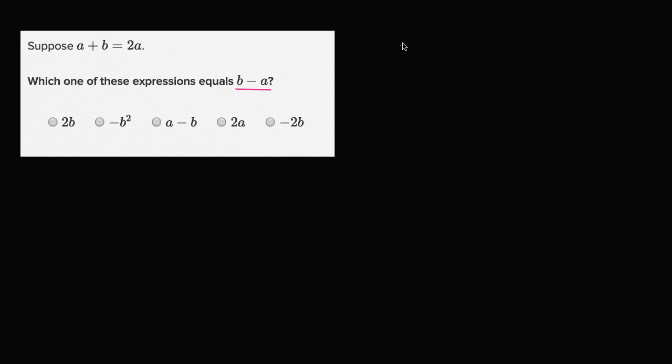So we are told that a plus b is equal to two a. The first thing I would want to do is get all my a's in one place. One way I could do that is subtract a from both sides. If I subtract a from both sides, I'm left with just b on the left hand side, and on the right hand side I'm left with two a minus a. Well, that's just going to be a.